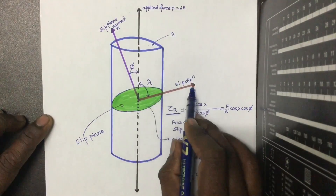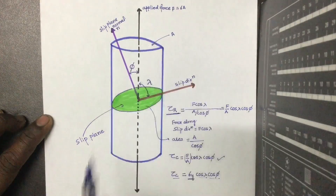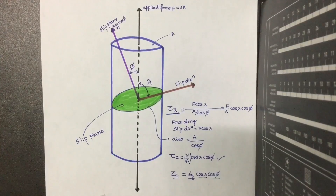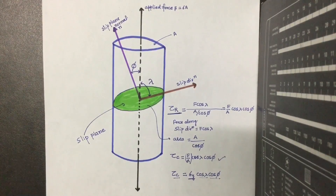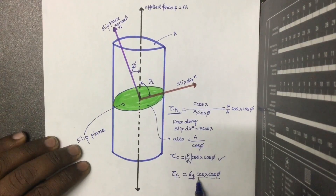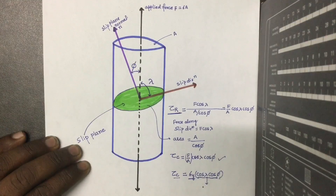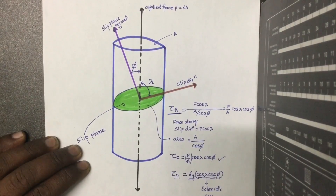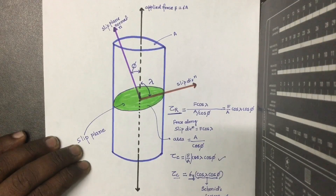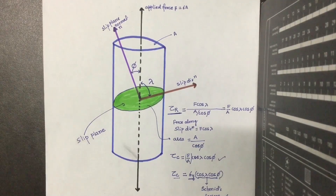The product cos(λ)·cos(φ) is called the Schmid factor. For the primary slip system, the value of the Schmid factor should be maximum. So we have derived the expression for critical resolved shear stress and defined the Schmid factor needed to identify the primary slip system.